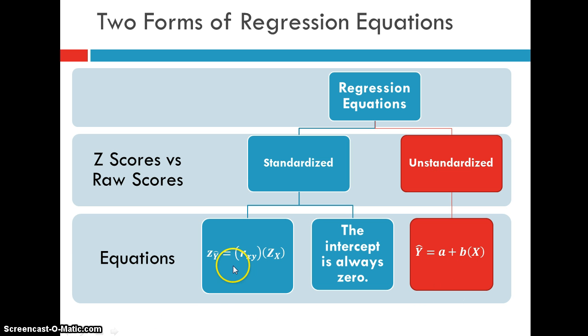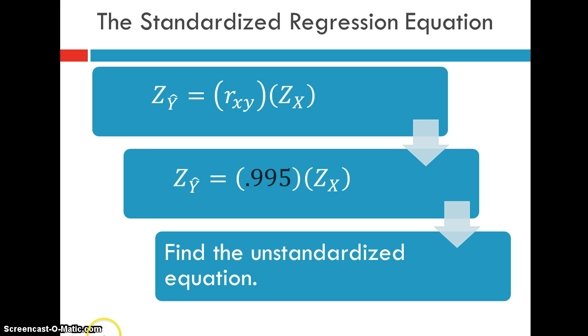So we are going to start by deriving this standardized regression equation. So in order to do that, we take our formula and we know that our value for the correlation between x and y is 0.995. So that's pretty simple. That's the easy part. The next part is to find this unstandardized regression equation. And we're going to use definitions that have been given for how this linear regression equation works to help us do that in part.